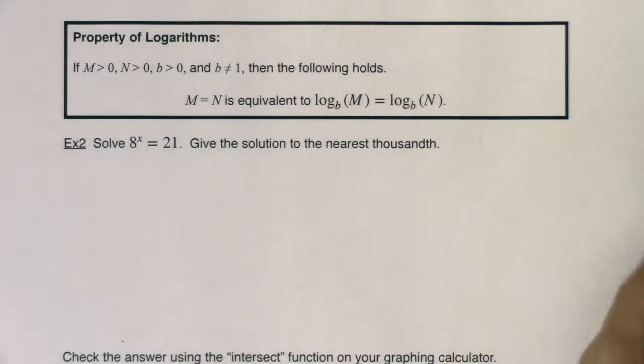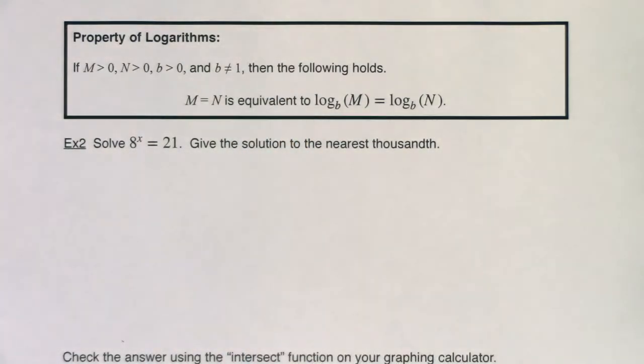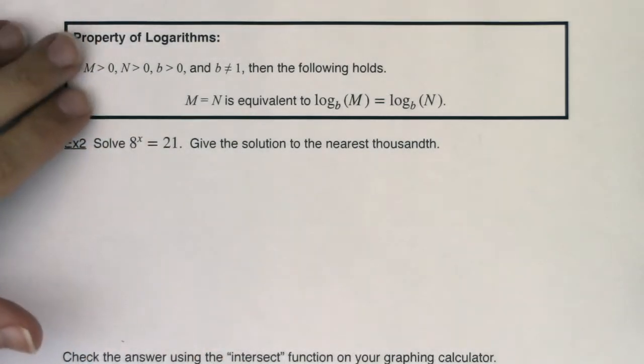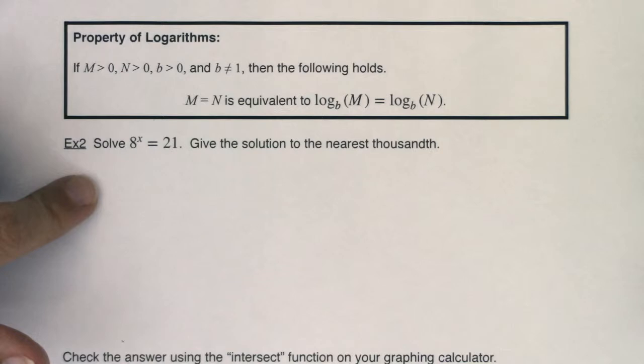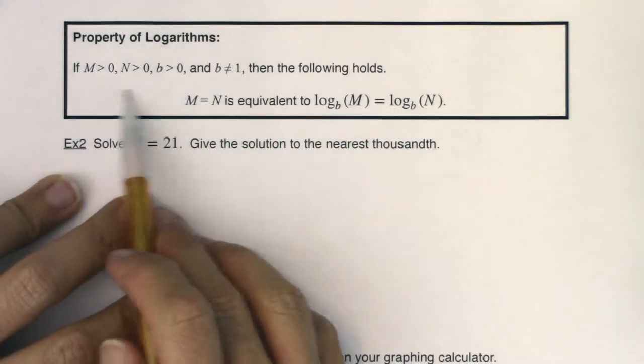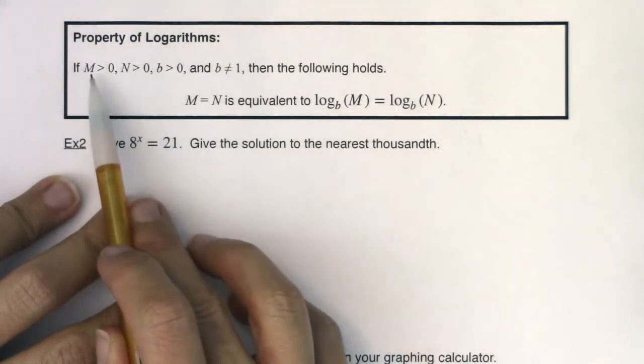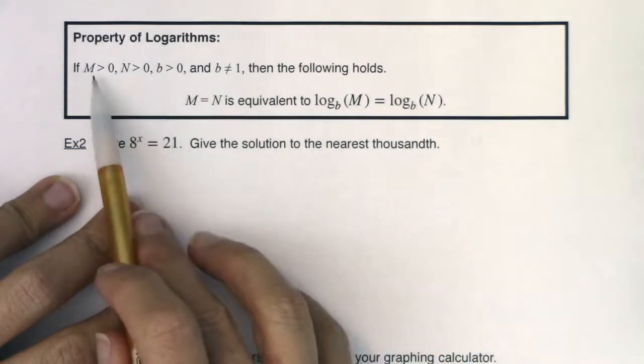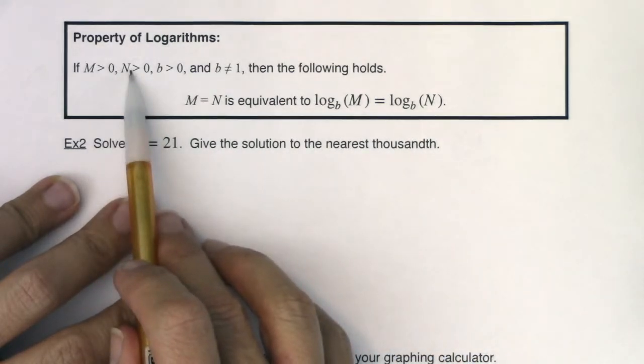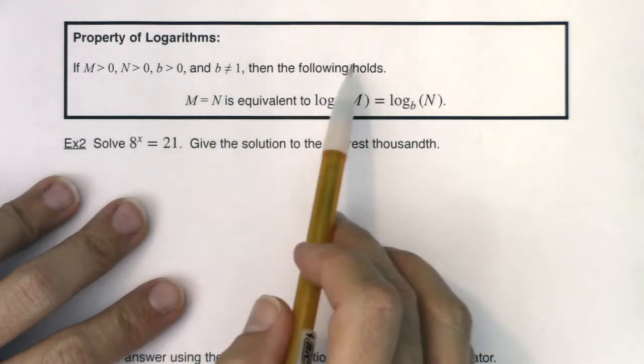Hey Math 31, welcome to example two. I want to show you another property of logarithms, and after we get through this property, I want to show you how it applies to solving an exponential equation like the one you have in example two. So if m, n, and b are positive, so both arguments are positive and our base is positive and also not equal to one, then the following holds.